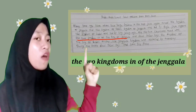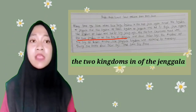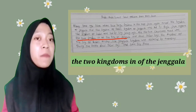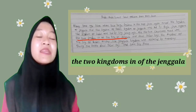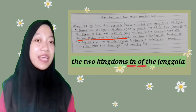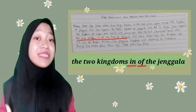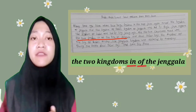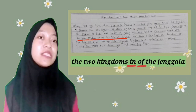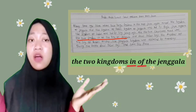Pay attention to this sentence: 'the two kingdoms in of the Jenggala.' From this sentence it can be seen that there are double prepositions, namely the preposition 'in' and 'of.' In this case, it can be seen that the writer has difficulty determining which preposition should be used — 'in' or 'of.'